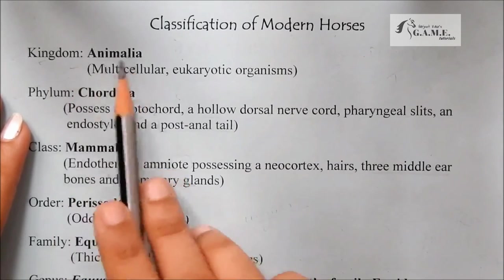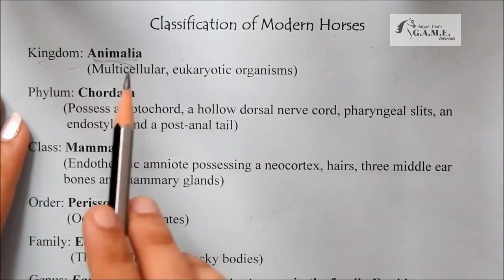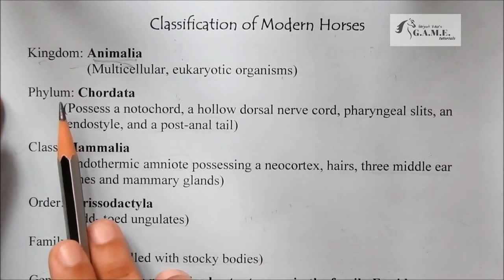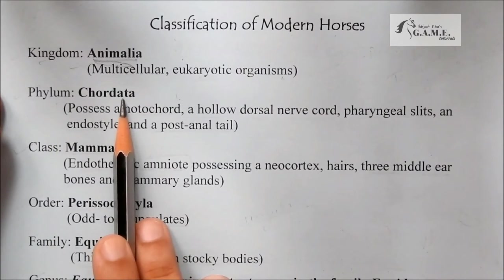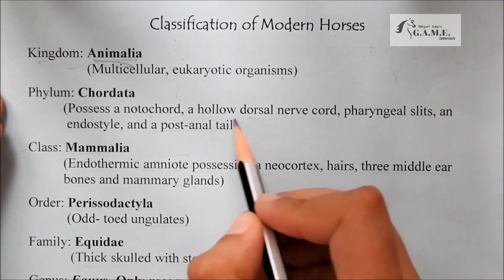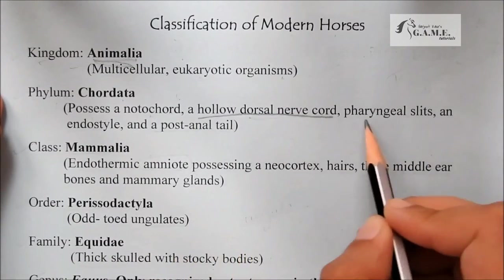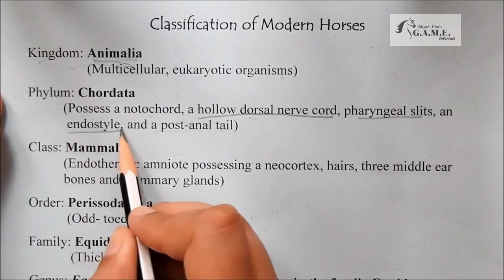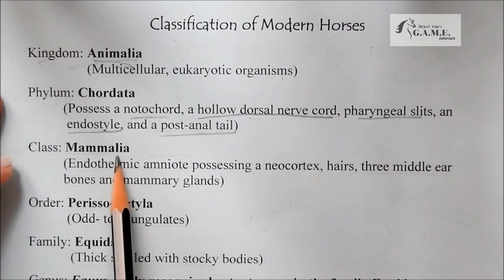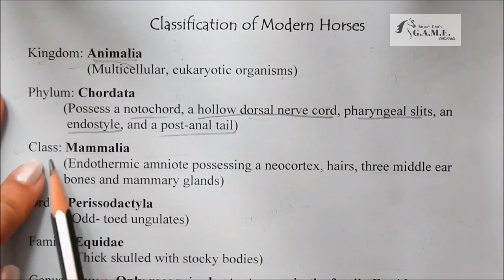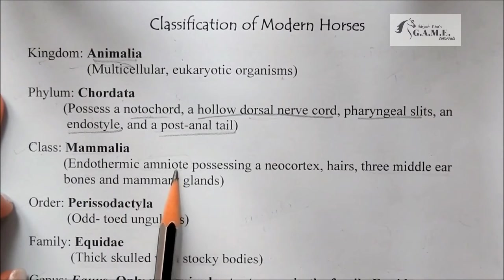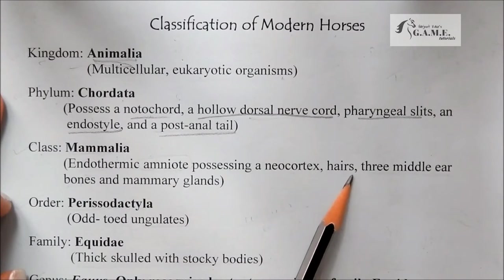In the classification of modern horse, first we have Kingdom Animalia — multicellular eukaryotic organisms. Next we have Phylum Chordata, which possess a notochord, a hollow dorsal nerve chord, pharyngeal slits, an endostyle, and a post-anal tail. Next we have Class Mammalia, which is the endothermic amniote possessing a neocortex, hairs, three middle ear bones, and mammary glands.